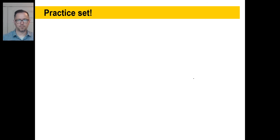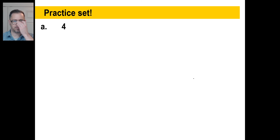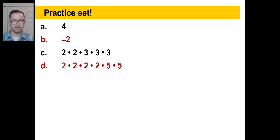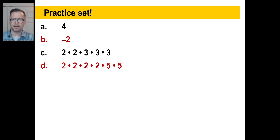Let's go through the practice set. A is 4. B is negative 2. C's prime factorization is 2 times 2 times 3 times 3 times 3 — that's 108 broken down. D breaks down as 2 times 2 times 2 times 2 times 5 squared — that's 2 to the 4th power times 5 squared — which is 400. You guys have a great day and good luck on today's practice problems. Take care, see y'all.